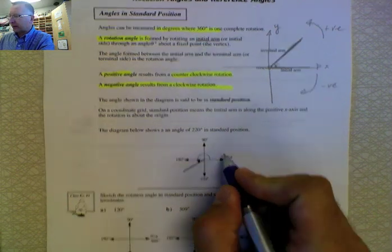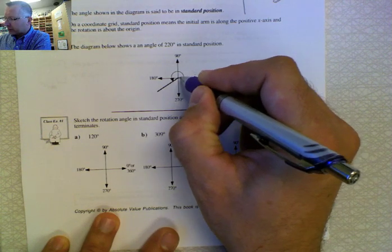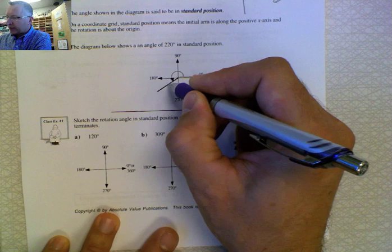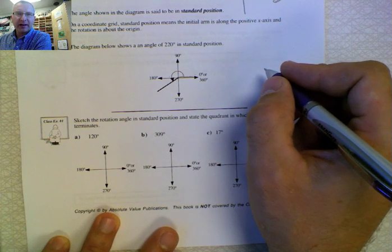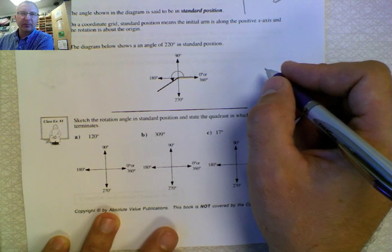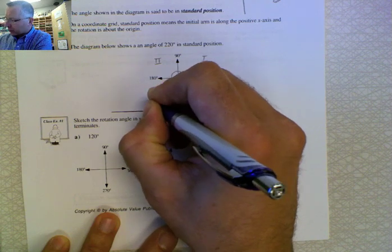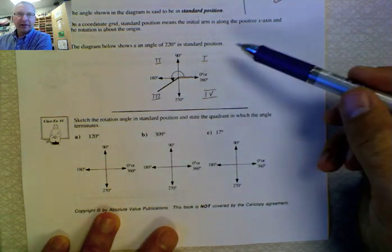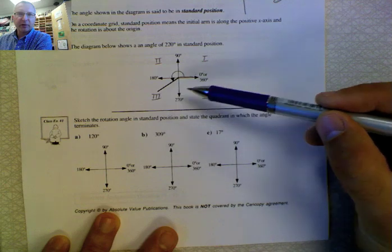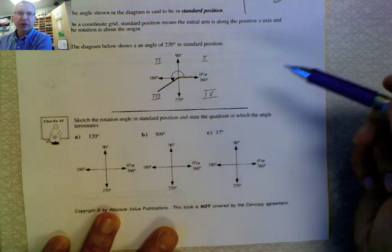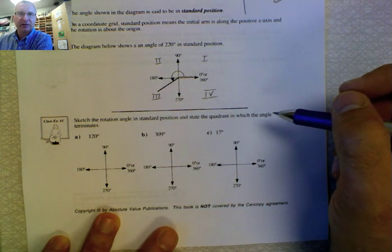Looking at this diagram, they've drawn an angle of 220 degrees. Starting at zero, the initial arm is at zero: 90, 180, and 220 is down here. We describe where the angle is by its quadrant. Quadrant one is top right, quadrant two is top left, quadrant three is bottom left, and quadrant four is bottom right. Referring to positions of angles by quadrants is standard in all mathematics.